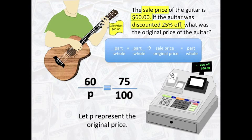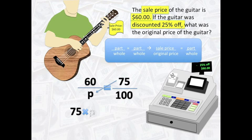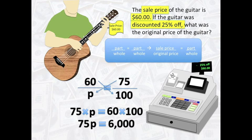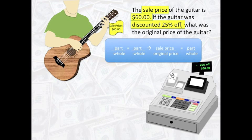Now, we need to cross multiply 75 times P, and put it on one side of the equal sign, and then cross multiply 60 times 100, and put it on the other side of the equal sign. Again, our equation should now read 75P equals 60 times 100. In the next step, we need to get the variable P by itself. First, we need to multiply 60 and 100 to get 6000. Then, we need to divide 75 on both sides of the equal sign. Thus, P equals 80. So, the original price of the guitar was $80.